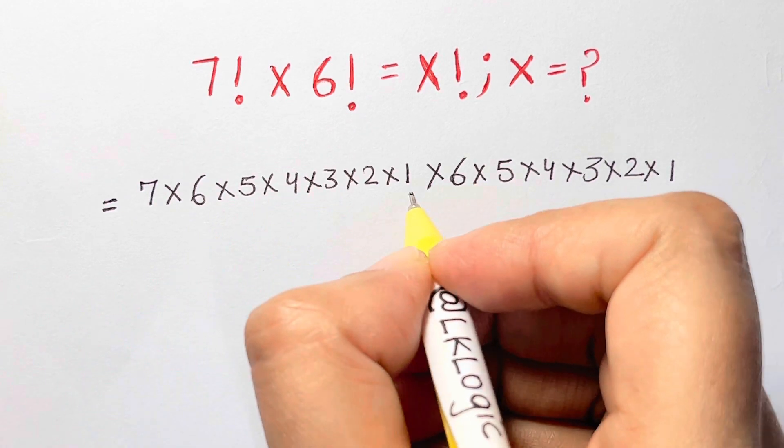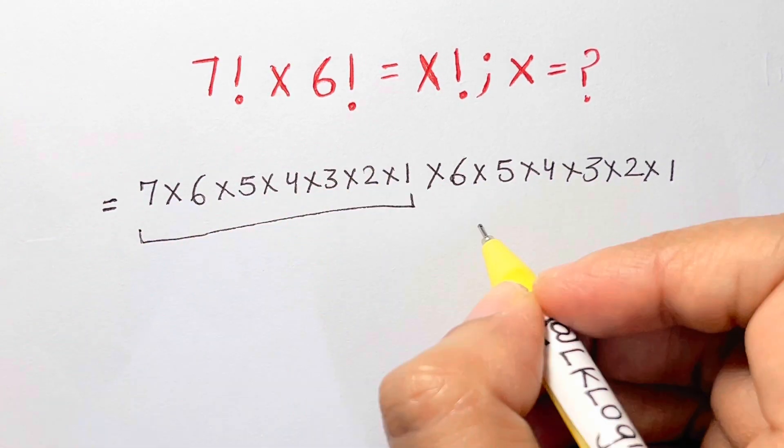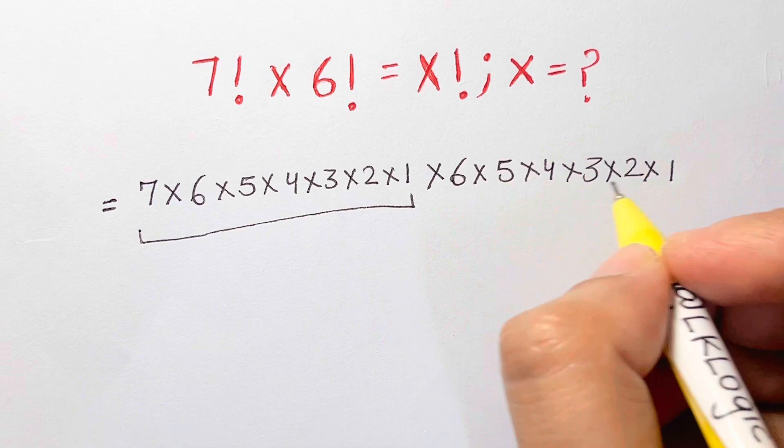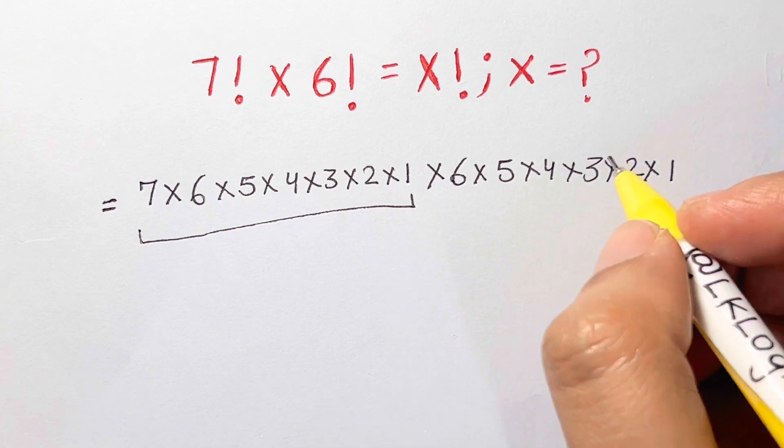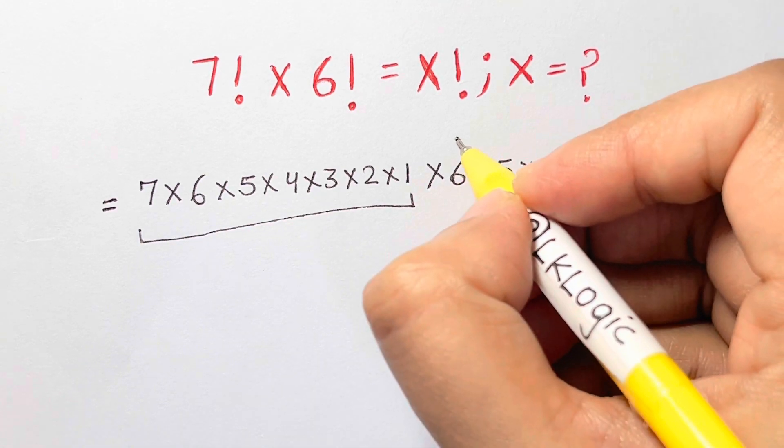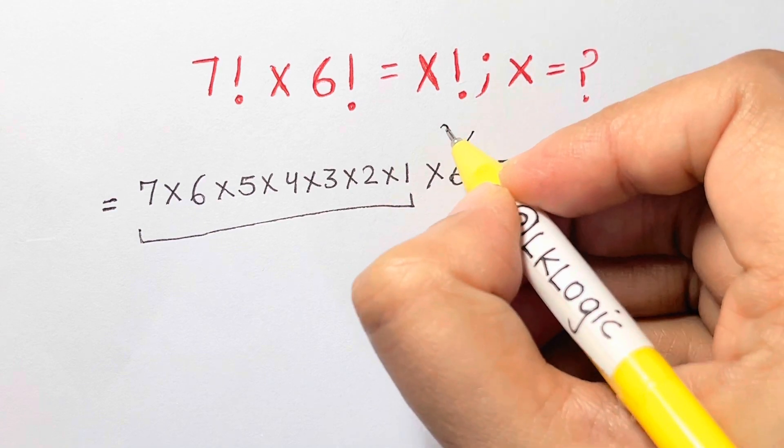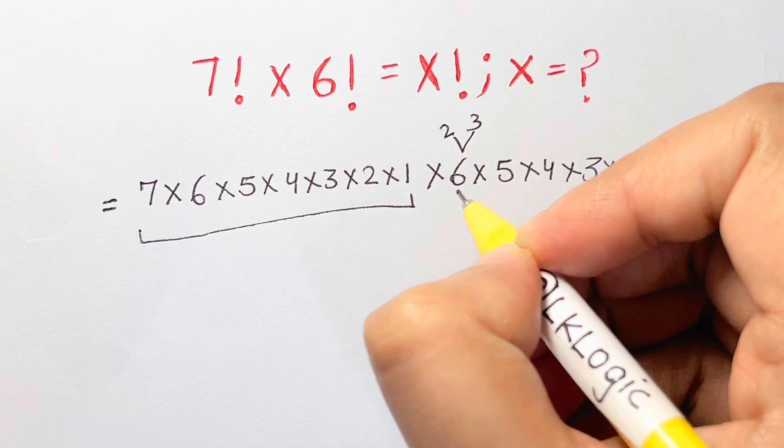you can see, this is from 1 till 7, and here I have 6 and 5. Let me just break it down so that you understand. 6 can be broken down into 2 and 3—2 times 3 is 6.